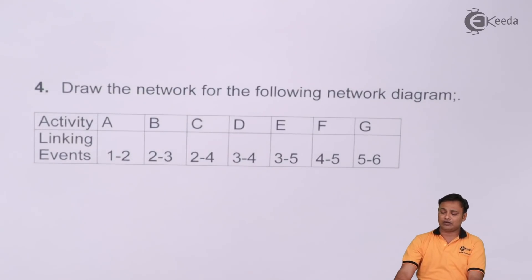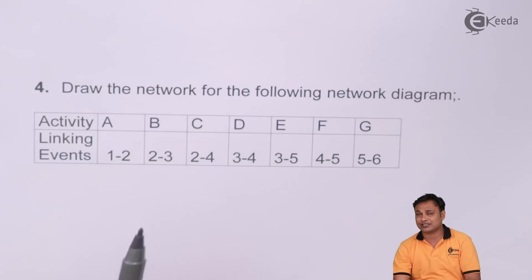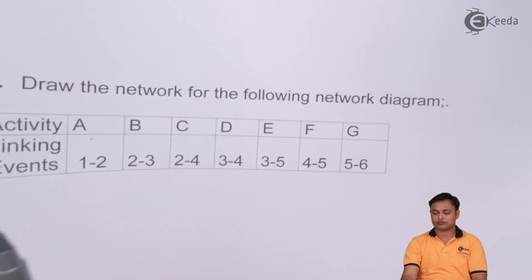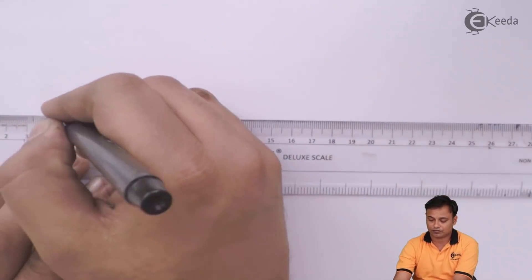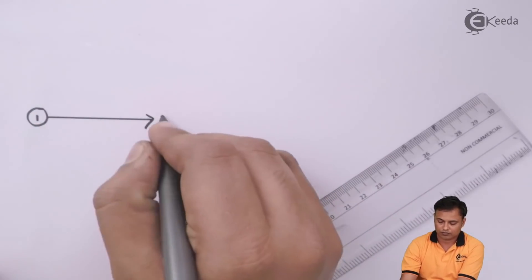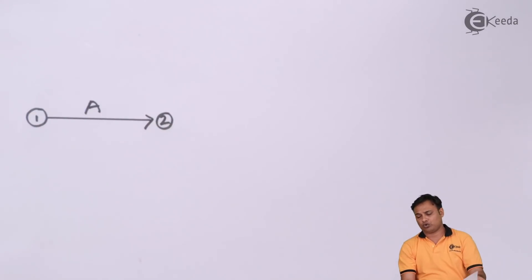Because this 1, 2, 3 these are the numbers that we normally use inside the nodes. So first I will draw 1 to 2 as A. This is my 1 to 2 as A.